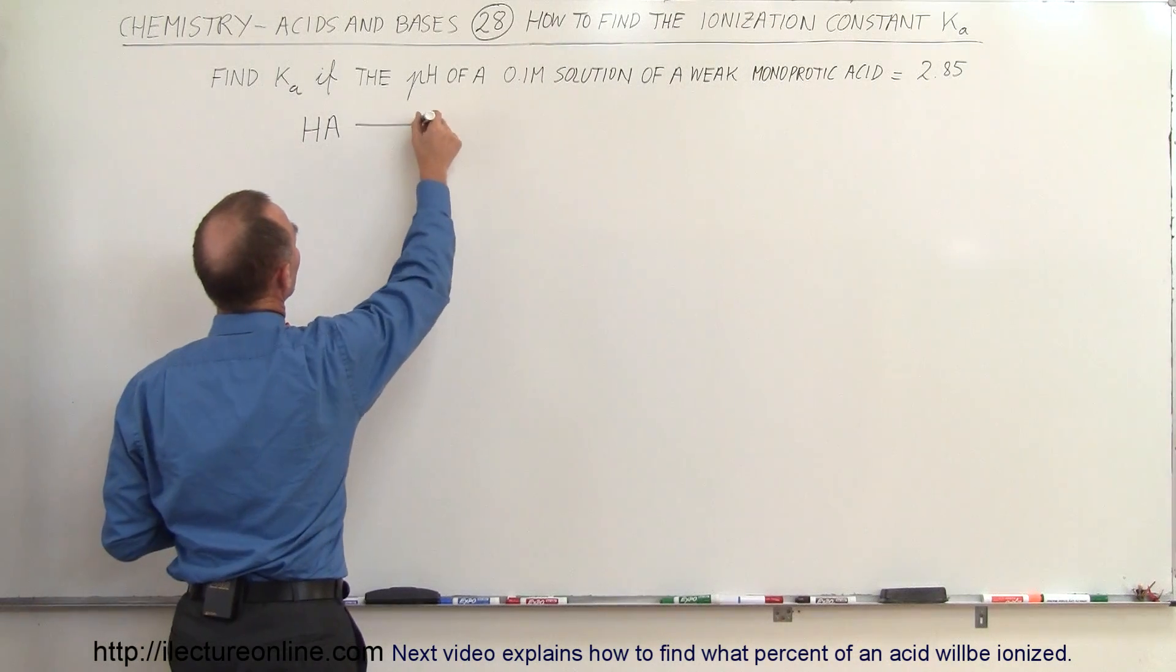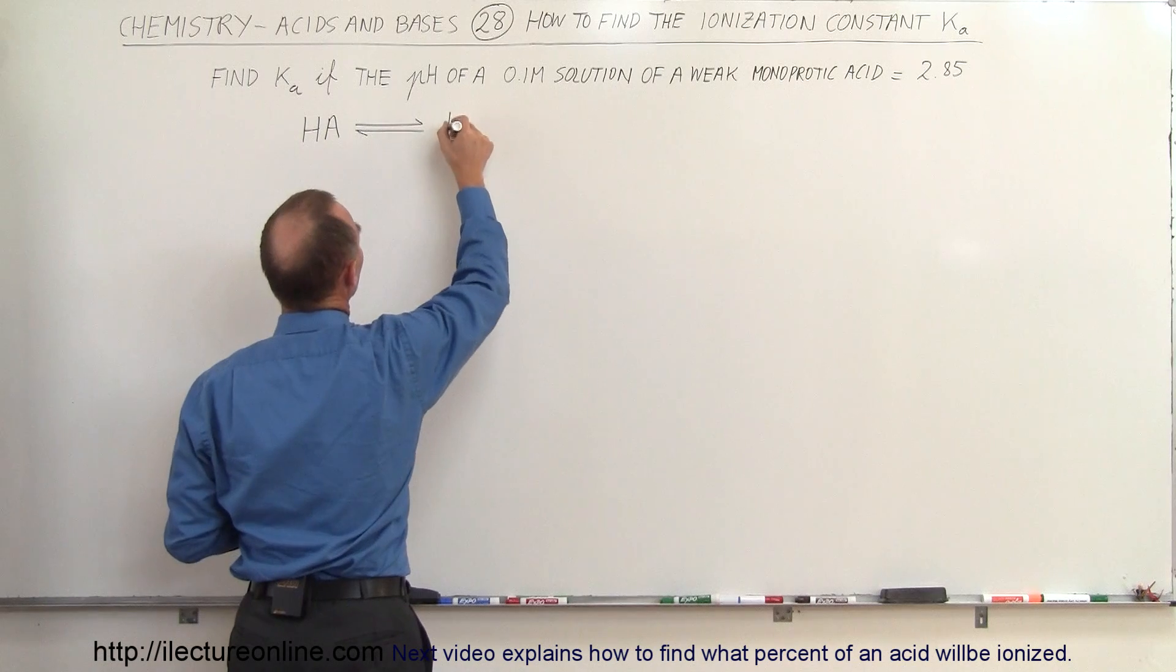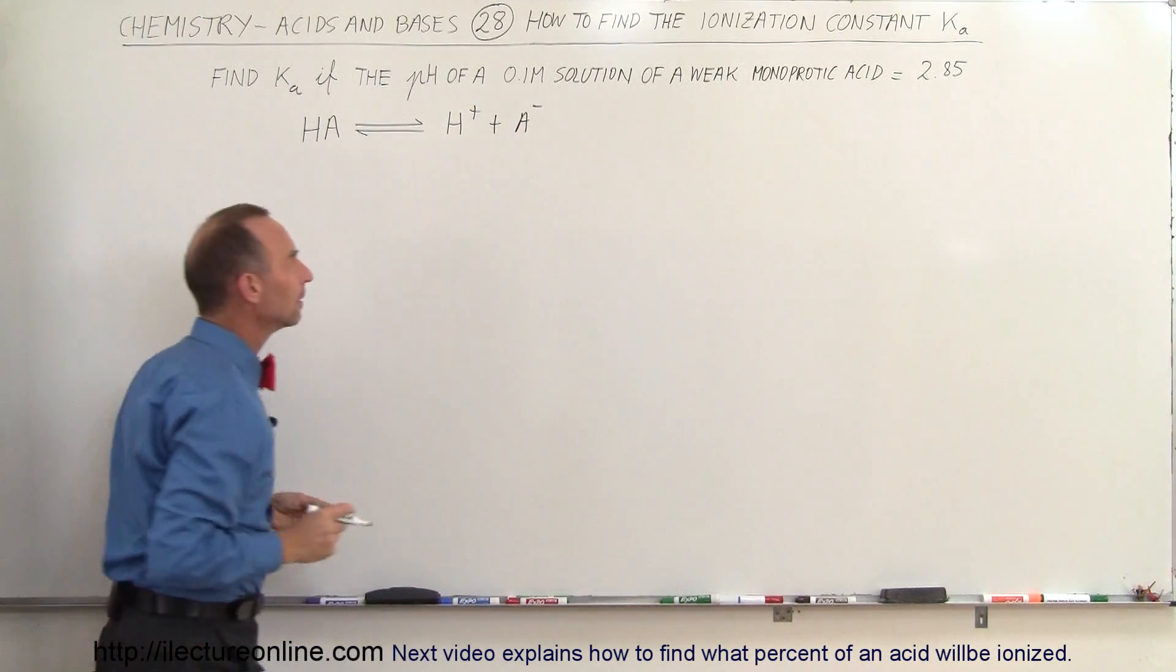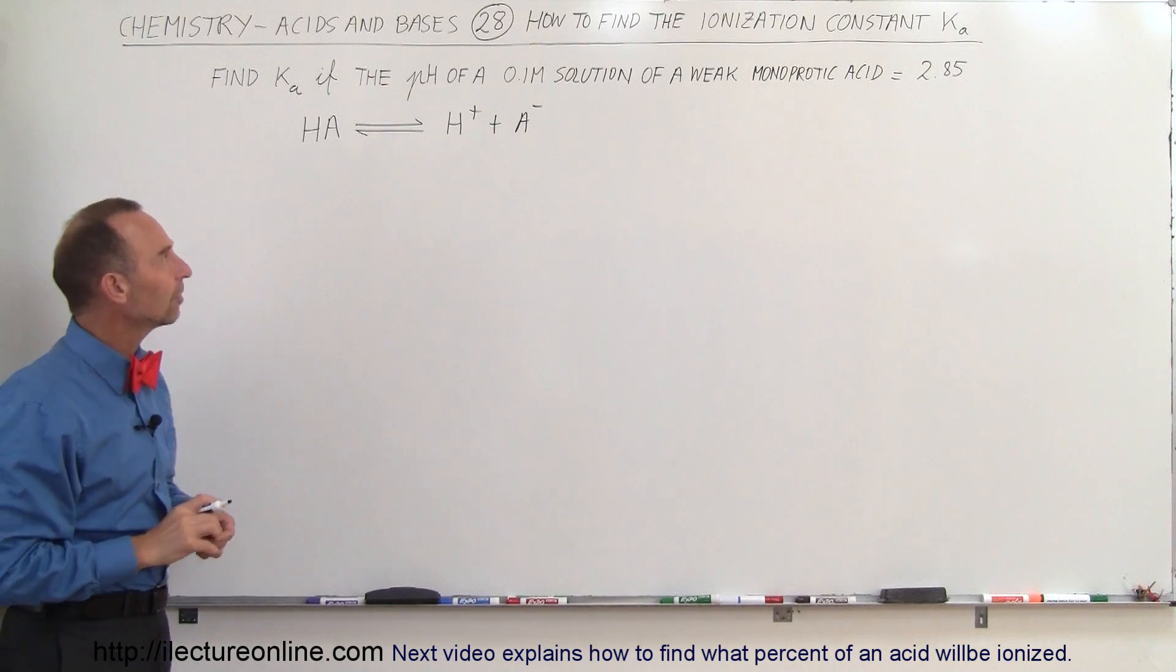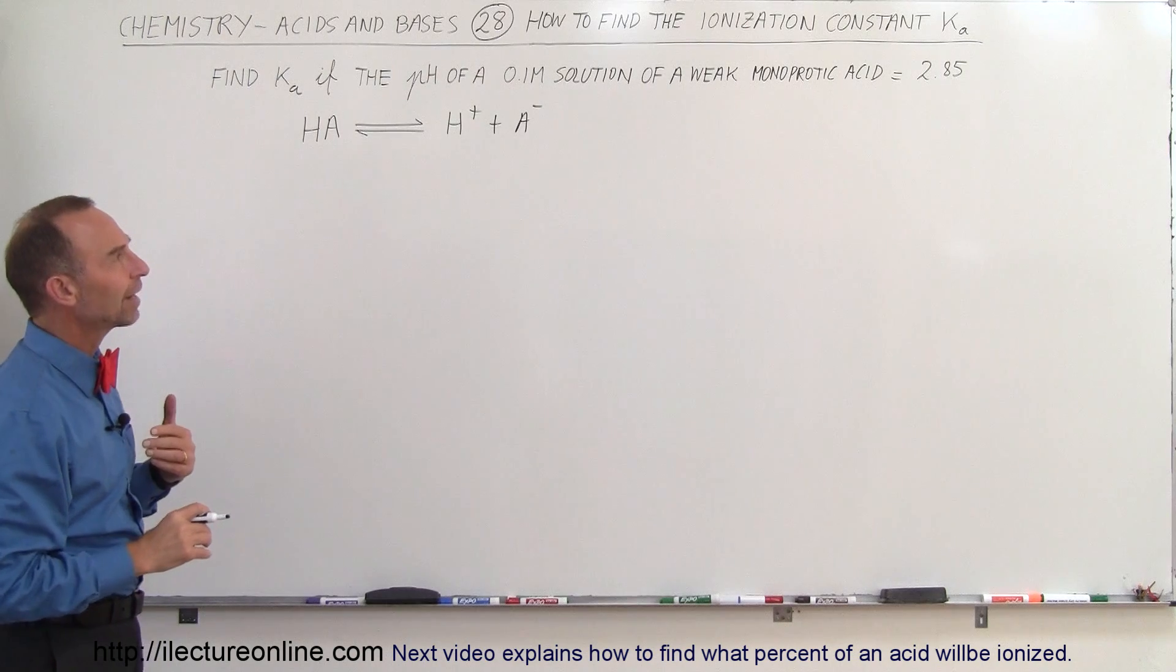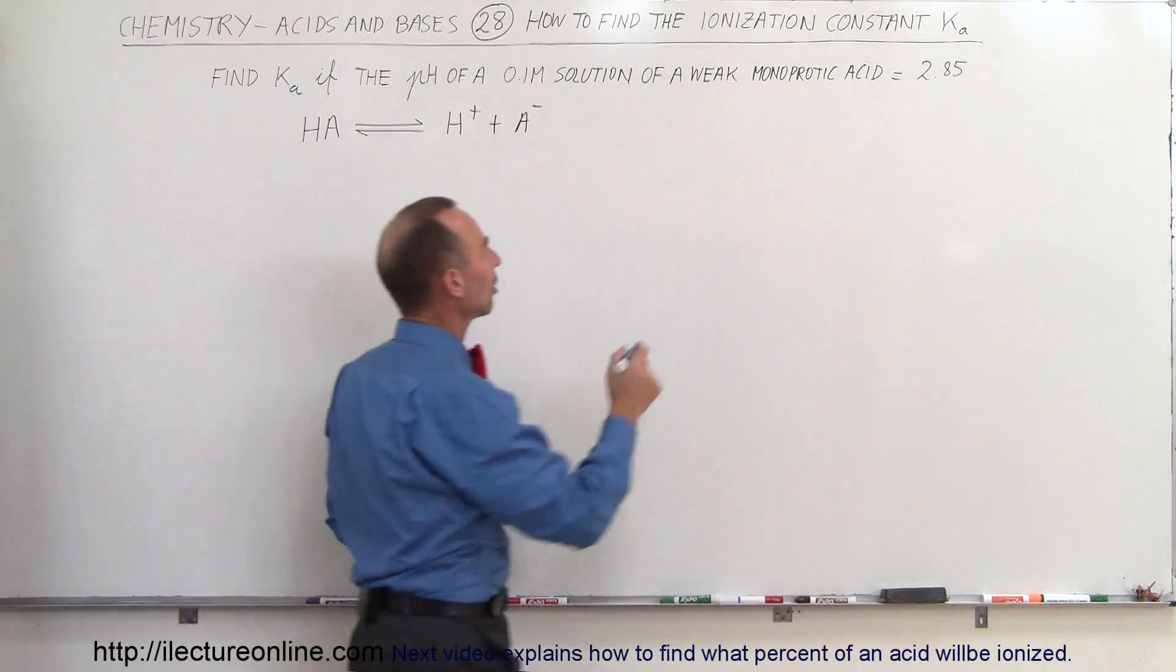So if we then have the reaction that looks like this, we'll have the hydrogen ion and the associated conjugate base. Now let's think of a strategy here. We're trying to find the constant, Ka, the ionization constant.